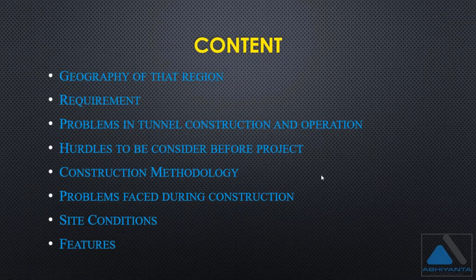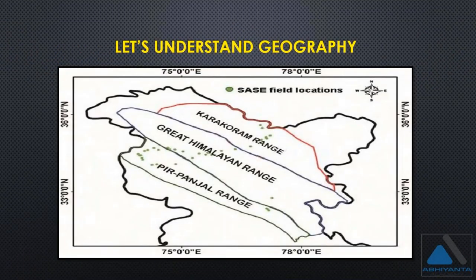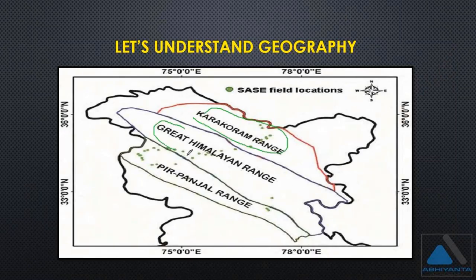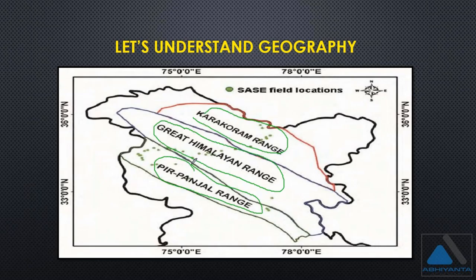Let's start with the first topic: the geography of this particular tunnel. On the map, you can see three different parts. First, the Karakoram range. Second, the Great Himalayan range. Third, the Pirpanjal range. These three are the main mountain ranges of the Himalayas. The majority of all tunnels in India in the Himalayan sector are under the Pirpanjal range, and this tunnel is also constructed in the Pirpanjal range.